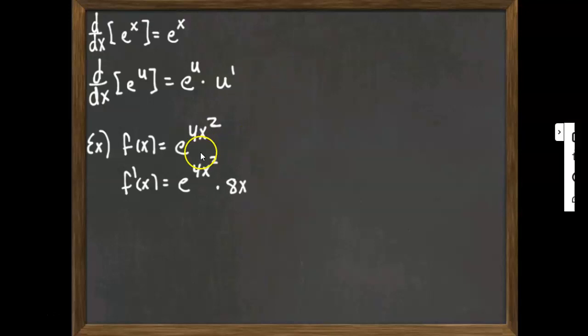So you could do the substitution step, but the idea behind this rule here is it just speeds it up a little bit, because we could let u be 4x squared. Then the derivative of e to the u would be e to the u. Derivative of 4x squared would be 8x. And then substitute back in for u. We'd have the same answer, which is 8x e to the 4x squared.